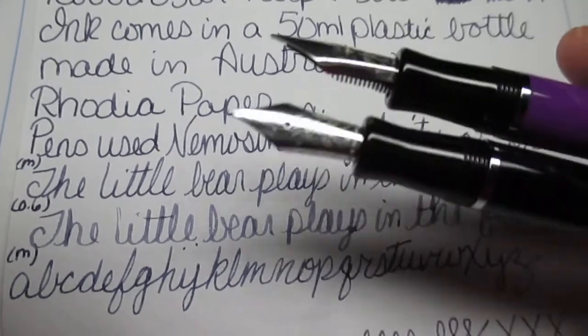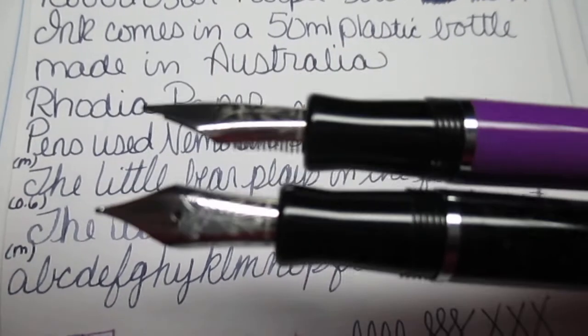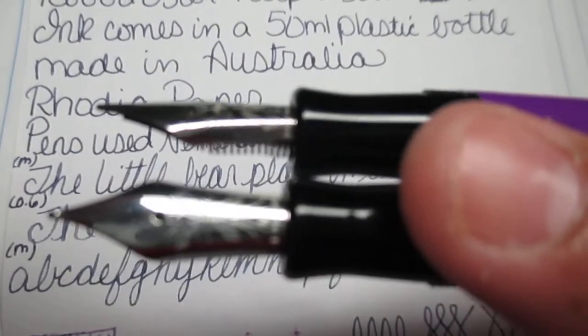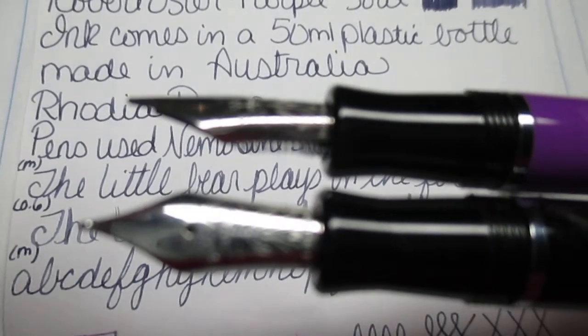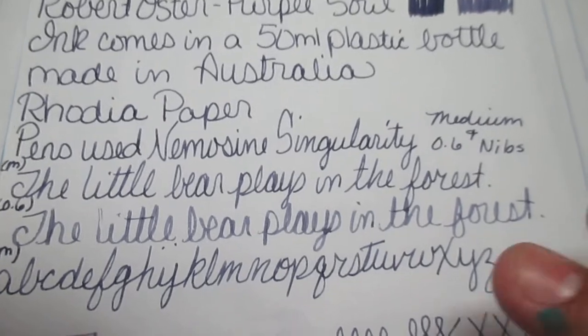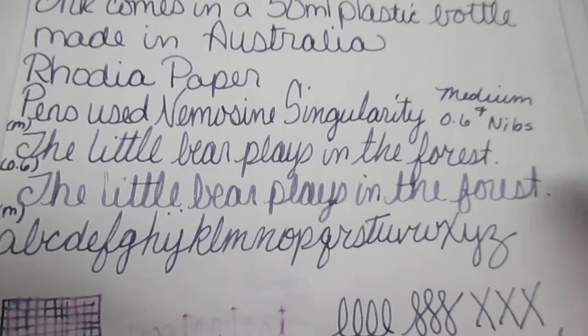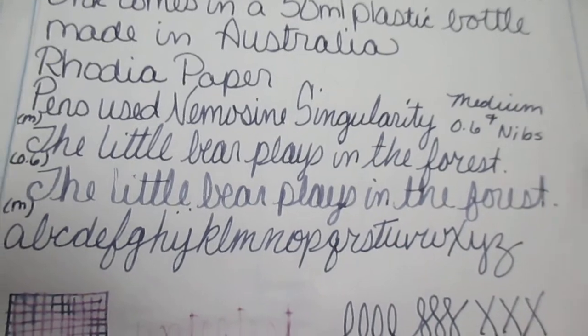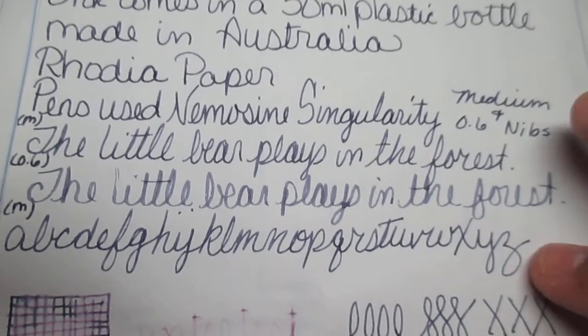The pens I used was Nemosine Singularities, which are these two. The medium nib and the 0.6 nib. And then I have my saying that a little bear plays in the forest with the alphabet.